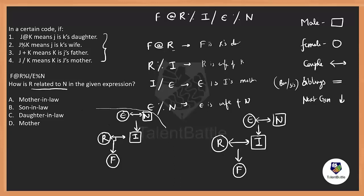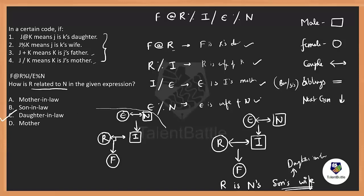The question asks: how is R related to N? R is I's wife. I is E's son. E is N's wife. So R is N's son's wife. Son's wife means daughter-in-law. Be careful — N is the father-in-law of R, but the question asks how R is related to N, so the answer is daughter-in-law.